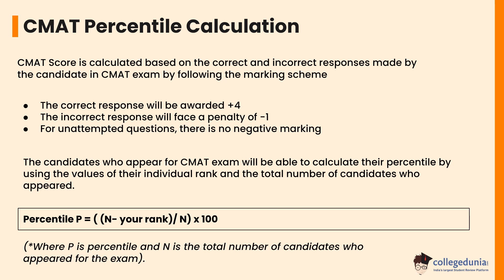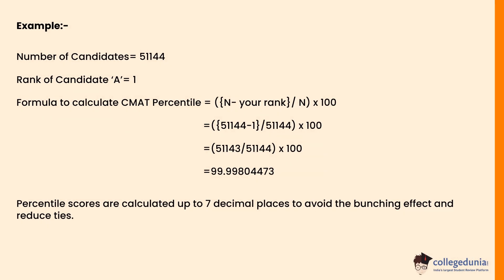Candidates who appear for the CMAT exam can calculate their percentile using their individual rank and the total number of candidates who appeared. Let P be the percentile and N be the total number of candidates who appeared. The formula is: P = ((N − your rank) / N) × 100. Last year, 51,144 candidates appeared in the CMAT exam. Using this formula, Candidate A with Rank 1 will have a percentile of 99.99804473. Percentile scores are calculated up to seven decimal places to avoid the bunching effect.